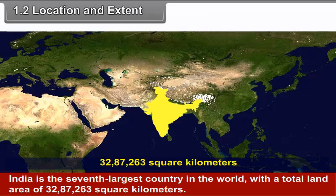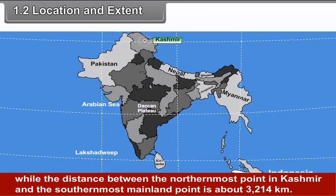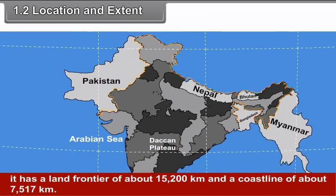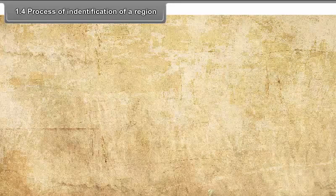India is the 7th largest country in the world with a total land area of 32,87,263 sq km. The distance from the westernmost point in Gujarat to the easternmost point in Arunachal Pradesh is about 2,993 km, while the distance between the northernmost point in Kashmir and the southernmost mainland point is about 3,214 km. It has a land frontier of about 15,200 km and a coastline of about 7,517 km.